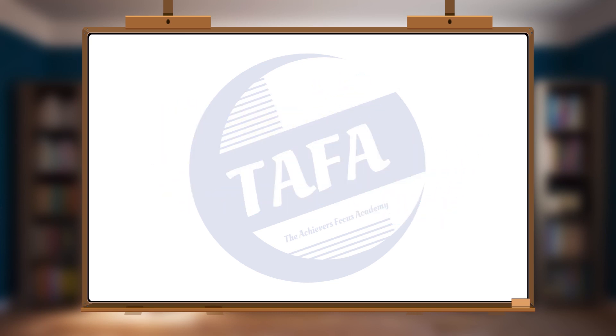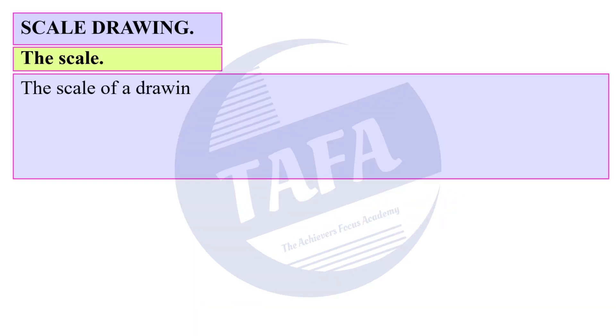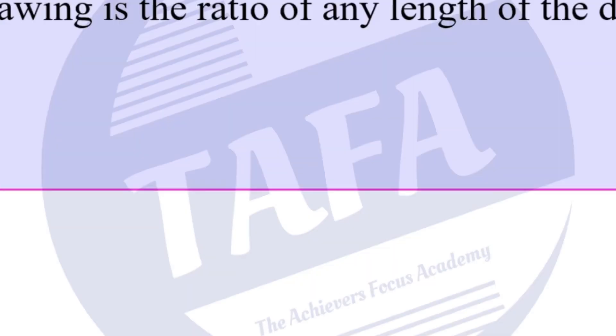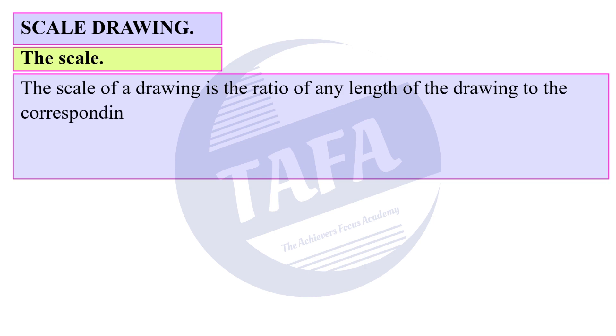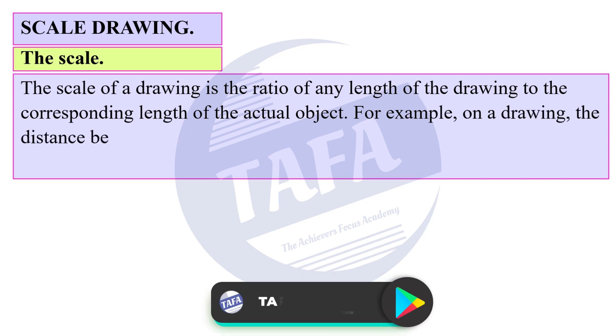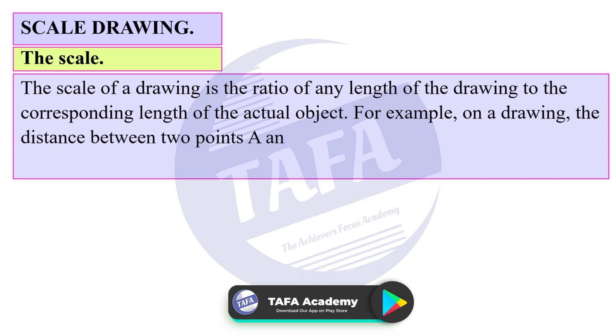The scale of a drawing is the ratio of any length of the drawing to the corresponding length of the actual object. For example, on a drawing, the distance between two points A and B can be represented by five centimeters.